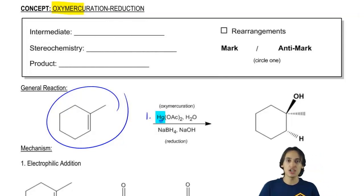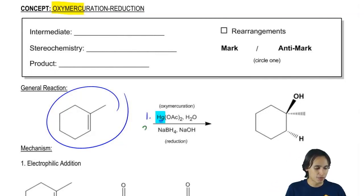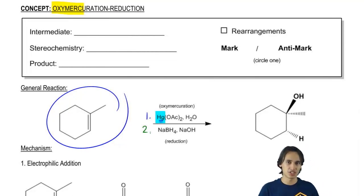So whenever you just see the Hg, you automatically know this is an oxymercuration. In fact, we won't see any other reactions with mercury until Orgo 2. So you're pretty safe that if it's a mercury, that's oxymerc. Then the second step of this is to react with NaBH4 and some kind of base like NaOH. This is called the reduction step or the demercuration step.